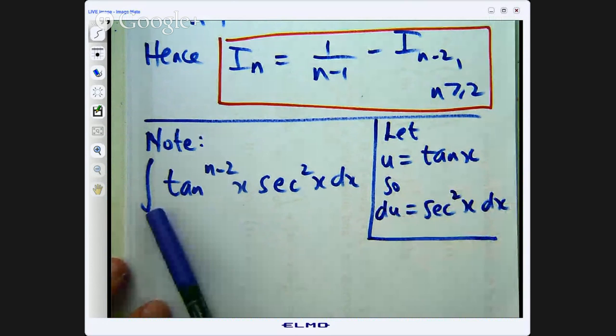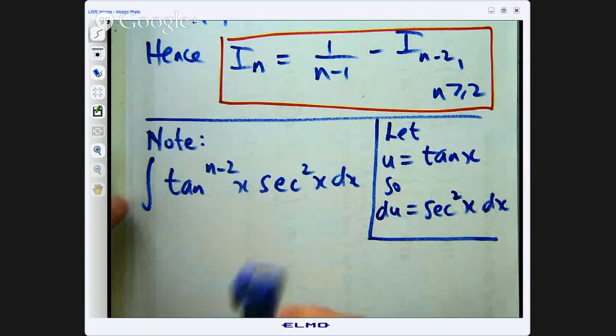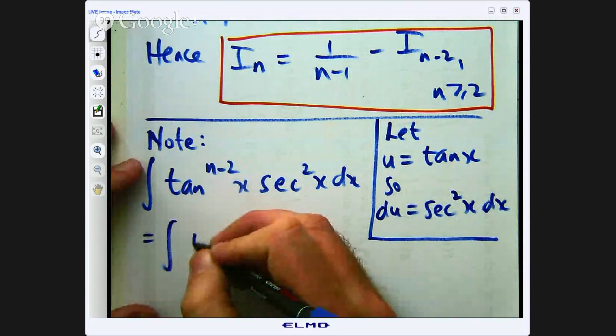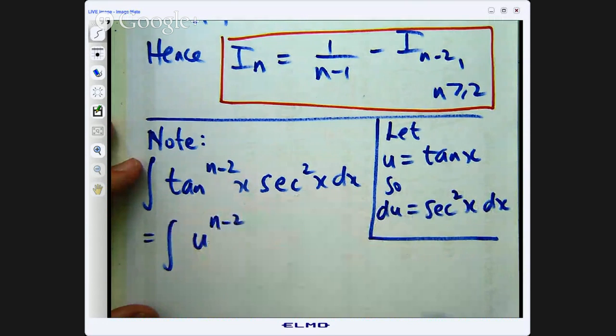So du equals sec squared x dx. Now let us substitute in. Wherever I see tan x, I replace it with u. So it will be u to the n minus 2, and sec squared dx is just du.